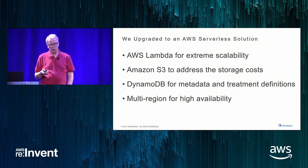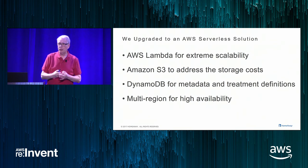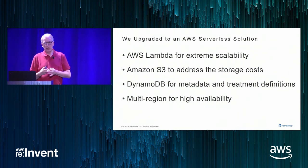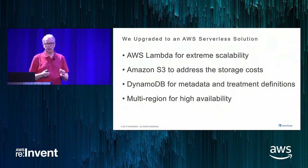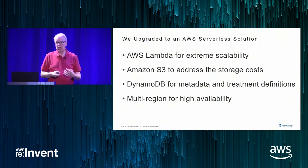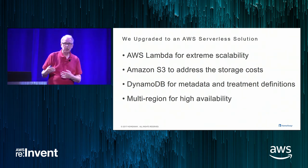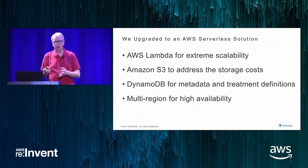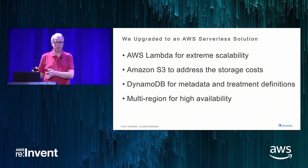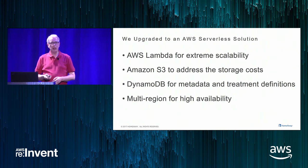Why did we switch to AWS serverless? AWS Lambdas give us the extreme scalability that we need. S3 storage gives us cheap storage — a terabyte of S3 storage can last us 14 years for the price of one terabyte we're paying for today. We're using DynamoDB for storing metadata about our images. And we get the benefit of Amazon being in multiple regions for high availability — so if our Austin data link goes down, we can still serve new images.